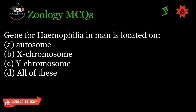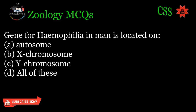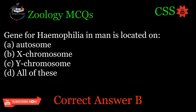Gene for hemophilia in man is located on: A. Autosome, B. X-chromosome, C. Y-chromosome, D. All of these. Correct answer: B.